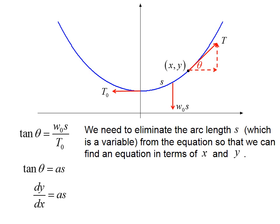We need to eliminate the arc length s, which is a variable, from the equation so that we can find an equation in terms of x and y. We can use ds squared equals dx squared plus dy squared. There's our old friend the Pythagorean theorem. So ds equals radical dx squared plus dy squared.